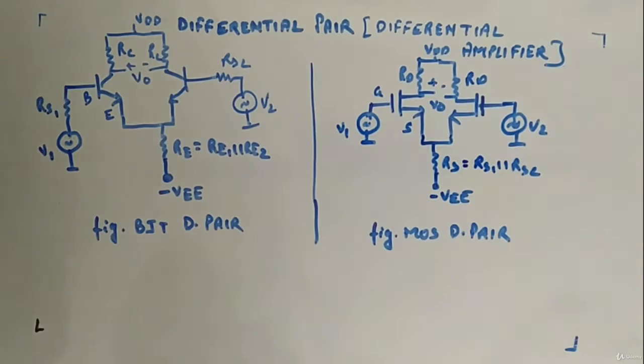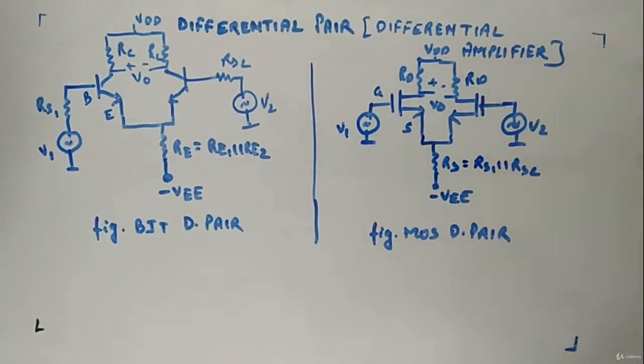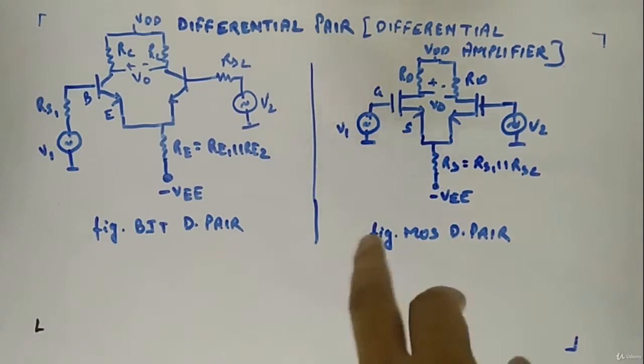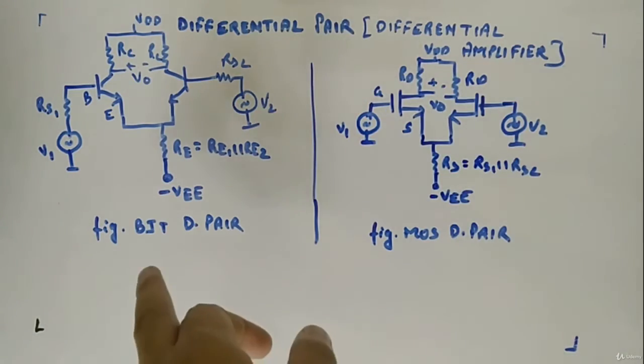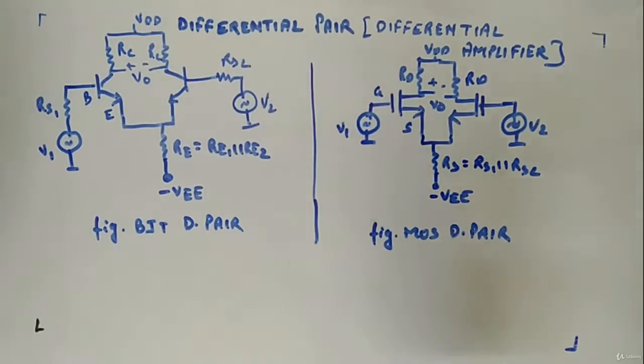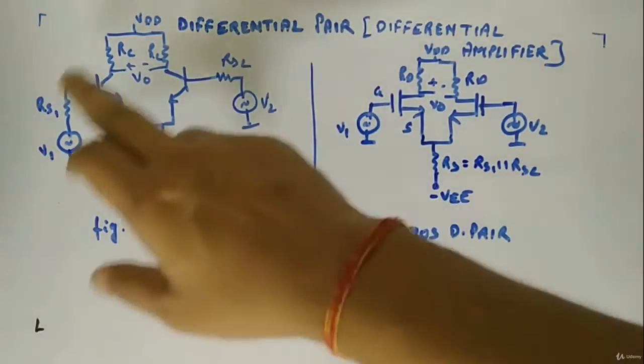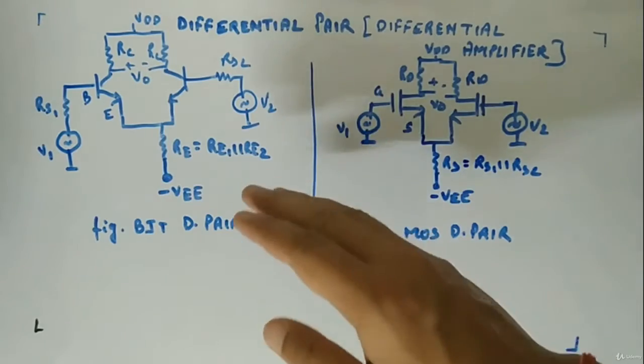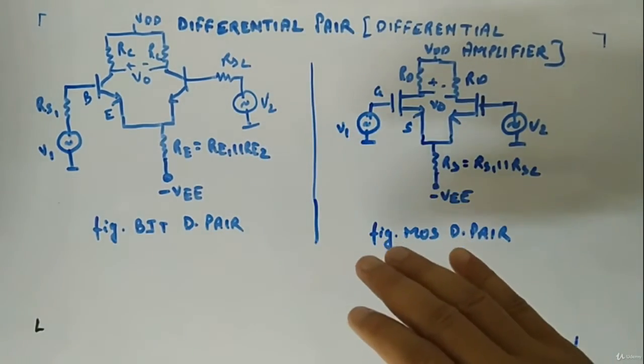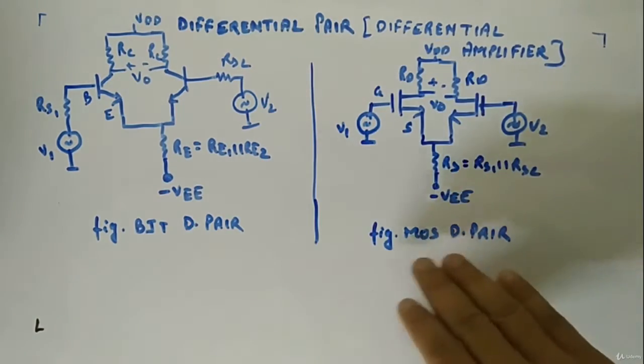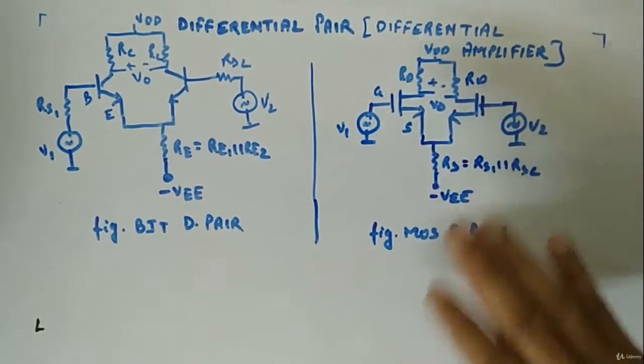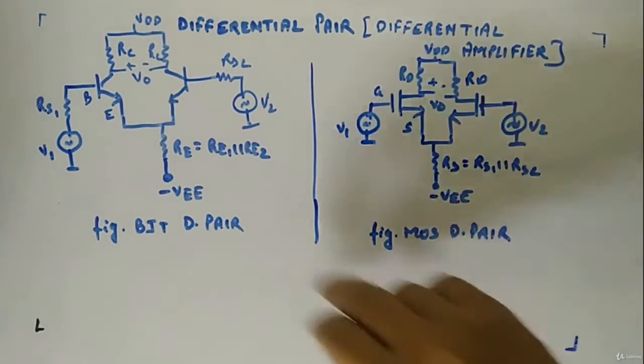Let's look at the circuit diagram of differential pair. First, here you can see the BJT differential pair. If you see this kind of arrangement, you quickly have to understand that this is a differential pair, and this is the MOSFET version of differential pair.